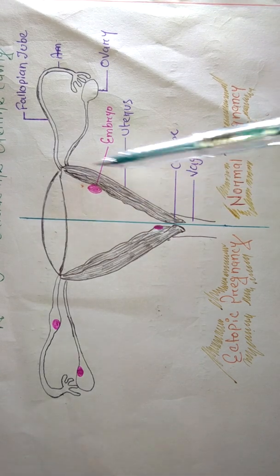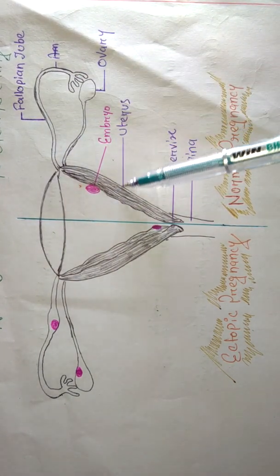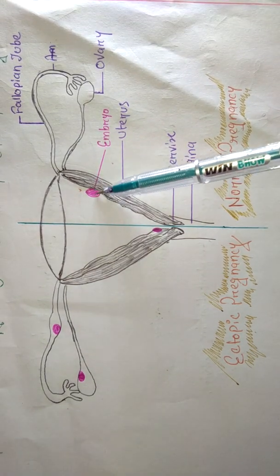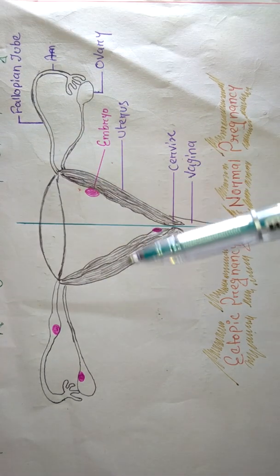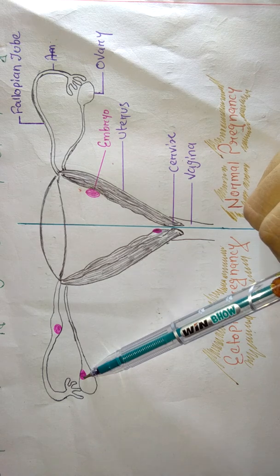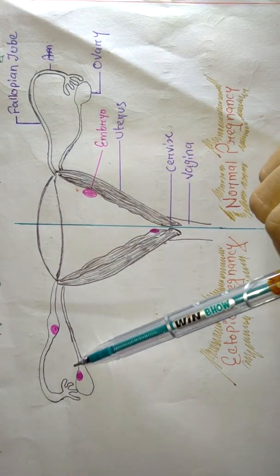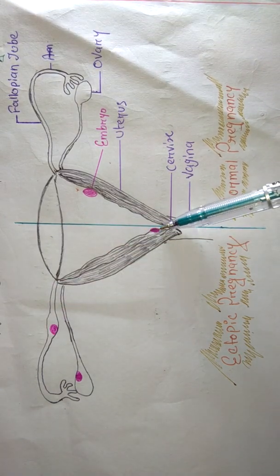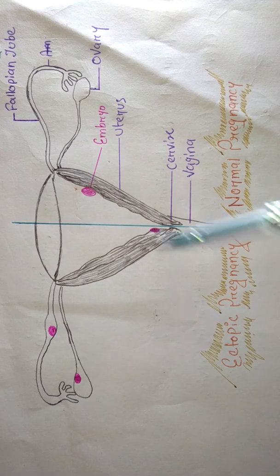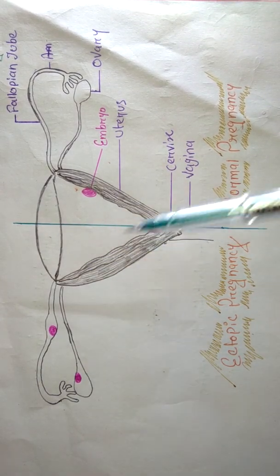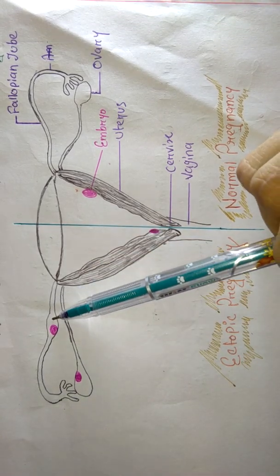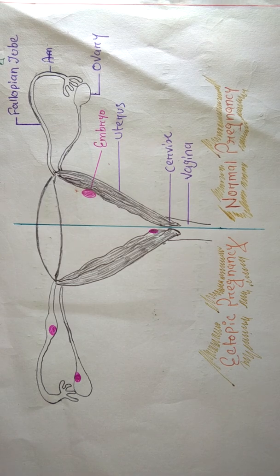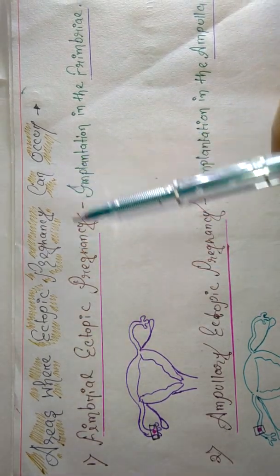Looking at a diagram: this is the uterus, fallopian tube, ovary, uterine wall, cervix, and vagina. In normal pregnancy, the fetus comes and starts growing in the uterine wall. In ectopic pregnancy, the fetus can get stuck on the ovaries, or in the fallopian tube, or implantation can even occur on the cervix. Any implantation outside the uterine wall is called ectopic pregnancy.